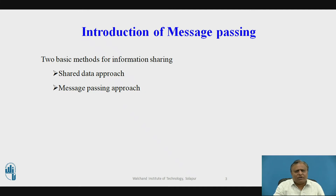Each computer of a distributed system may have a resource manager process to monitor the current status and usage of its local resources. The resource managers of all the computers might communicate with each other from time to time to dynamically balance the system load among all the computers. Therefore, a distributed system needs to provide an inter-process mechanism to facilitate such communication activities.